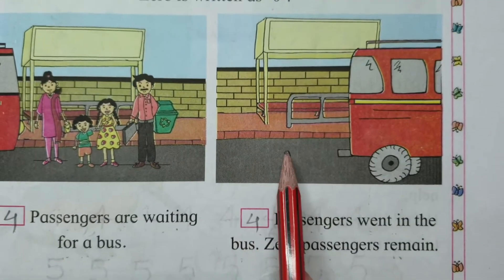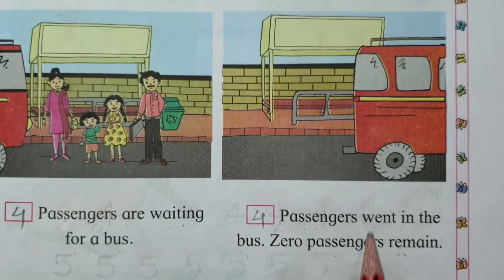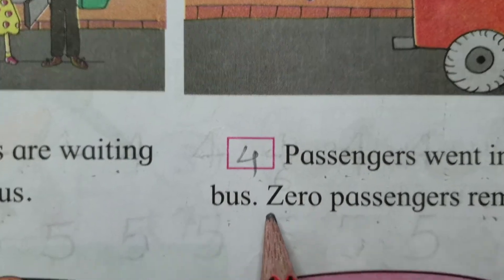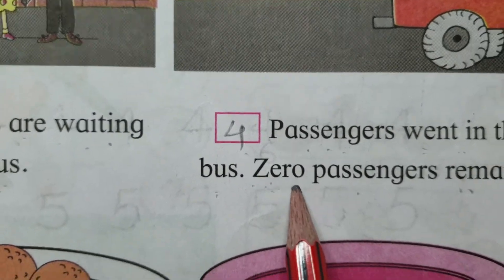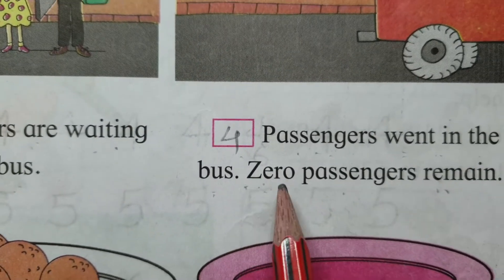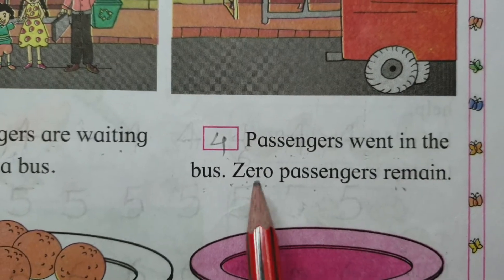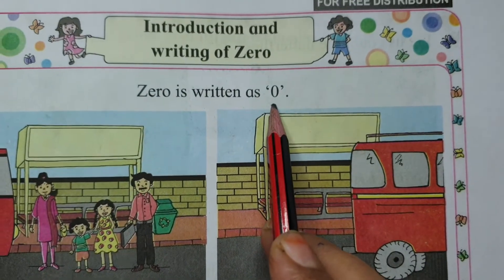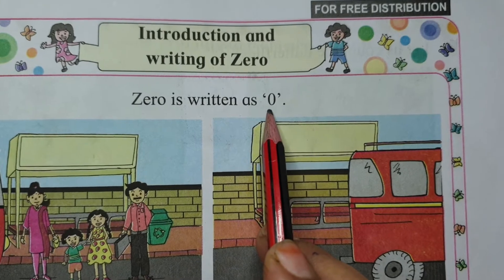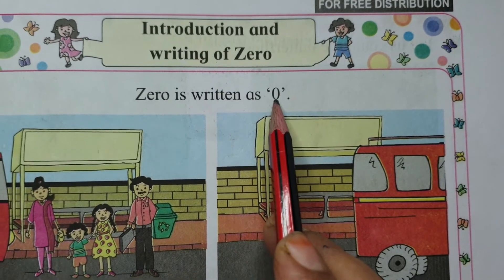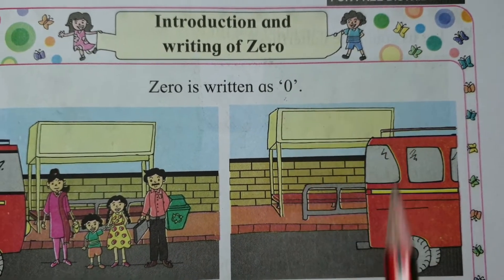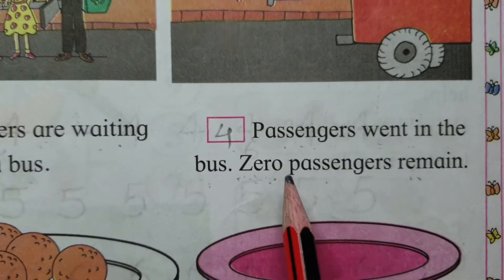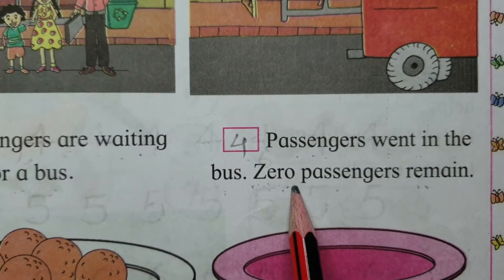Toh ise kya kahenge mathematics mein? Zero. Dekho zero ki spelling — Z-E-R-O, zero. Aur use hum is tareeqe se bhi adaad mein likh sakte hain. Digit mein zero is tareeqe se likhenge, aur words mein Z-E-R-O. Aap dekho.